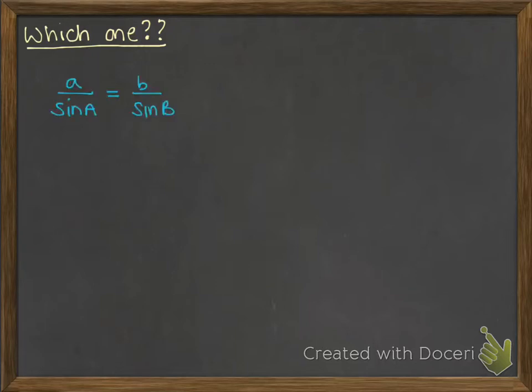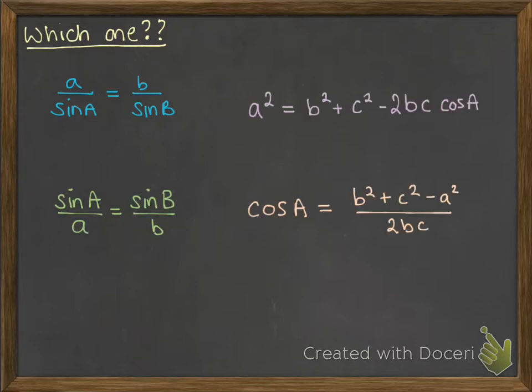So we've got this one here that's the sine rule if you're looking for a side. The sine rule can also go the other way around if you want an angle. We've got the cosine rule where that purple one at the top is if you're looking for a missing side, and that peachy one is if you're looking for a missing angle. But how do you know which one of these you're supposed to use?